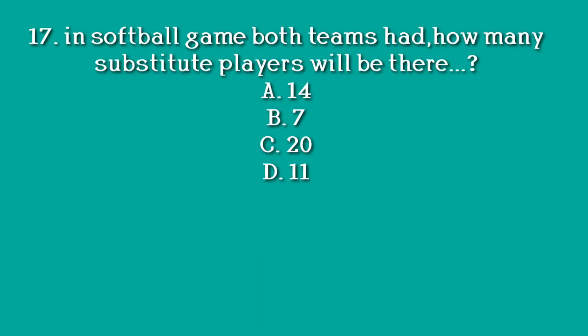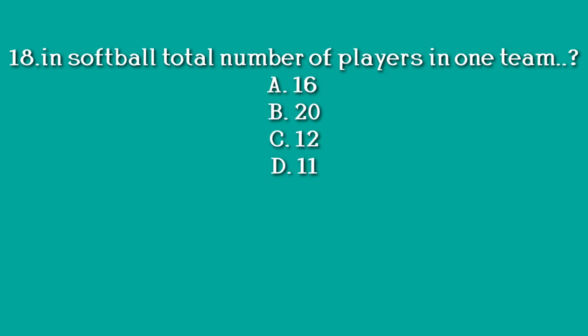Question number 17: In a softball team, how many substitute players will both teams have? Option A. 14. Option B. 7. Option C. 20. Option D. 11. Answer: A. 14. Answer: 16 members.